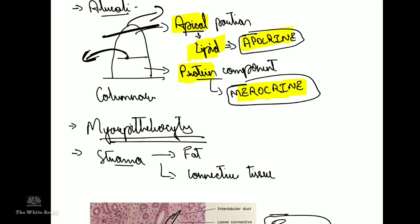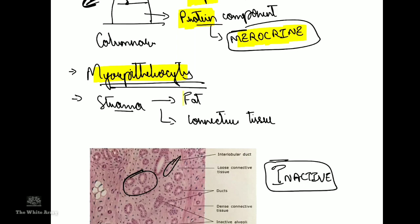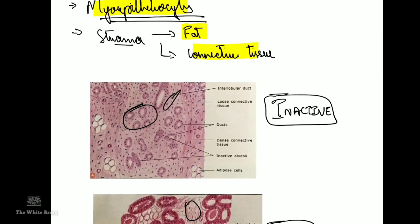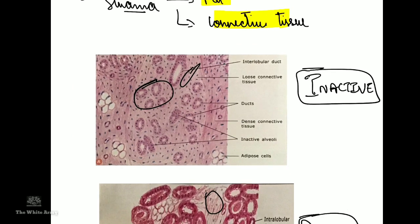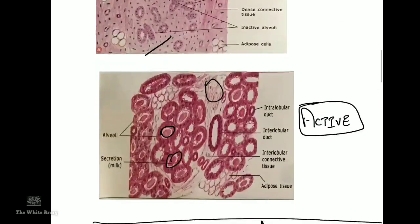The gland remains intact, and both the alveoli and the ducts are lined by myoepithelial cells. It is the contraction of these myoepithelial cells that helps in the drainage of milk from the alveoli up to the lactiferous sinus. The stroma is made up of fat and connective tissue. The inactive breast has very few alveoli and a large stromal component, whereas in the active gland the stromal component is reduced and the alveoli are hypertrophied with secreted milk.